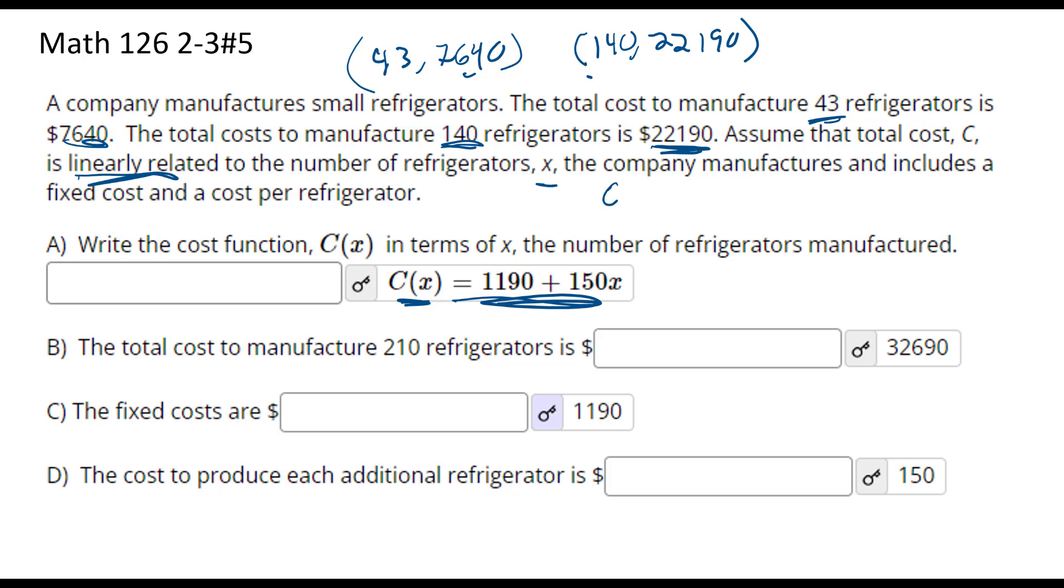Let's get the slope first. So if we take 22,190, subtract 7640, then divide by 140 minus 43. In the numerator, we're going to have 14,550. So 14,550 divided by 97 is 150, which is the slope.